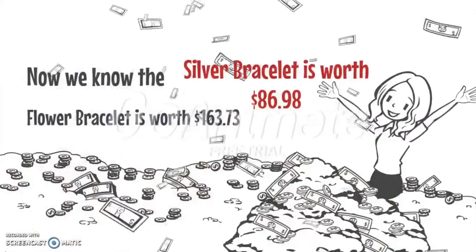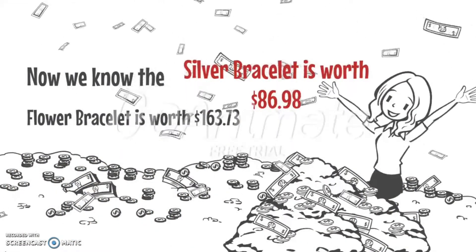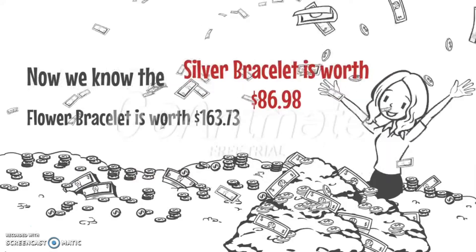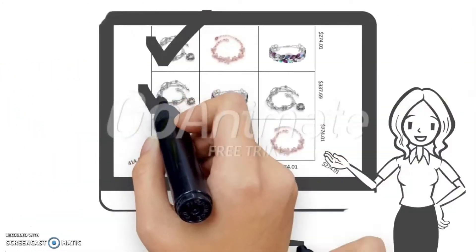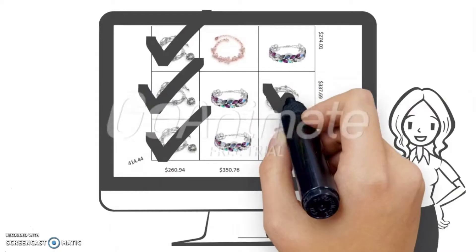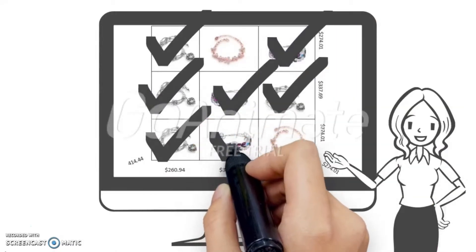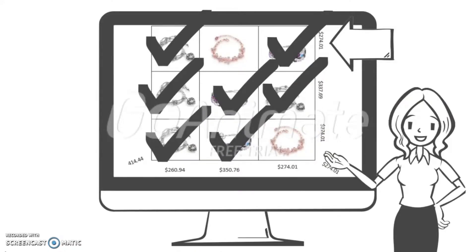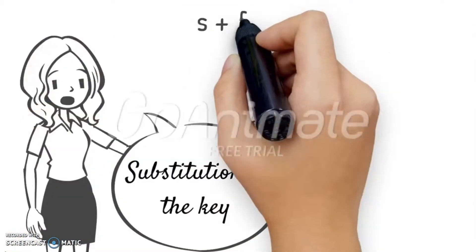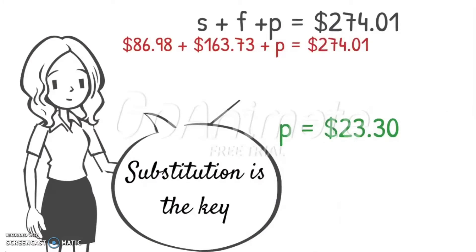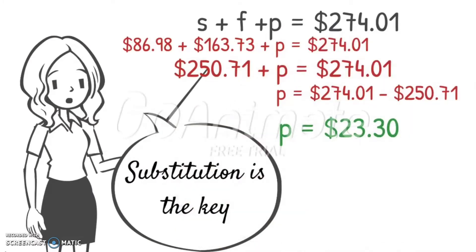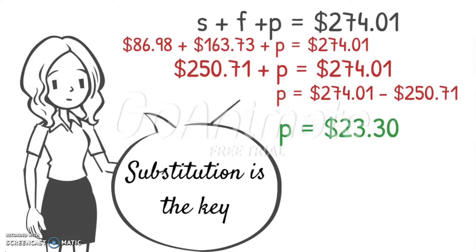So now we know the silver bracelet is worth $86.98 and the flower bracelet is worth $163.73. We know all of those values, and the only thing left is the pink bracelet. The equation is one silver plus one flower plus one pink equals $274.01. Substitution is the key — we just plug in the prices we already know for the silver and flower bracelets, and we find that the pink bracelet is worth $23.30.